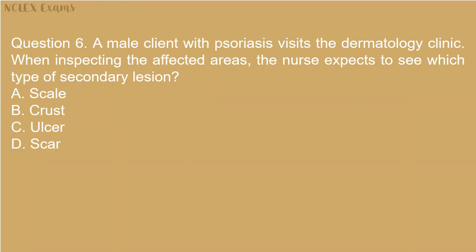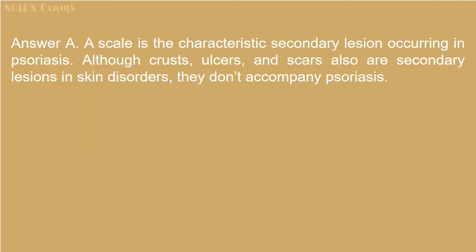Question 6: A male client with psoriasis visits the dermatology clinic. When inspecting the affected areas, the nurse expects to see which type of secondary lesion? A) Scale. B) Crust. C) Ulcer. D) Scar. Answer A: A scale is the characteristic secondary lesion occurring in psoriasis. Although crusts, ulcers, and scars are also secondary lesions in skin disorders, they don't accompany psoriasis.